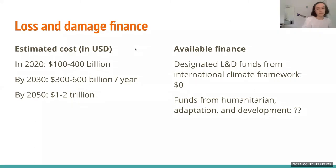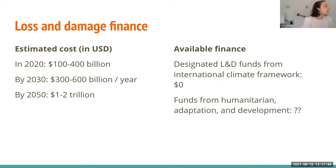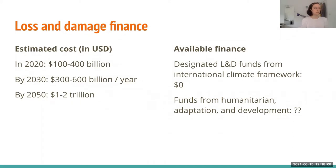In terms of finance for paying for loss and damage, the estimated cost in 2020 was between 100 and 400 billion US dollars. Loss and damage is challenging to measure, but by 2030 they estimate the cost will be between 300 and 600 billion US dollars per year, and by 2050 this cost could reach one to two trillion US dollars per year. And the designated funds from the international climate framework for loss and damage are zero dollars.